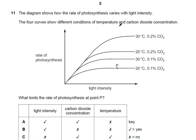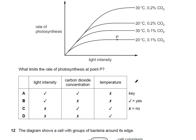Question 11: a graph shows the rate of photosynthesis versus light intensity under different temperature and CO₂ conditions. At point P, light intensity is not limiting the rate because increasing light does not increase the rate. However, increasing CO₂ or temperature does increase the rate, so temperature and carbon dioxide concentration are the limiting factors at this point. The answer is C.